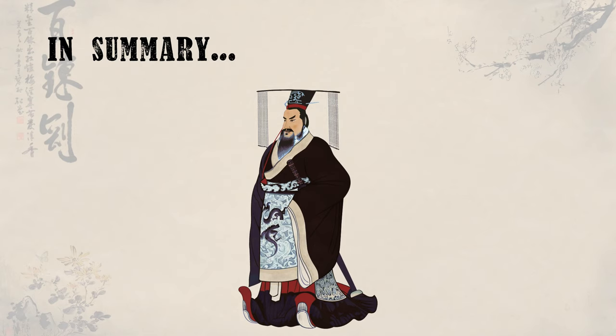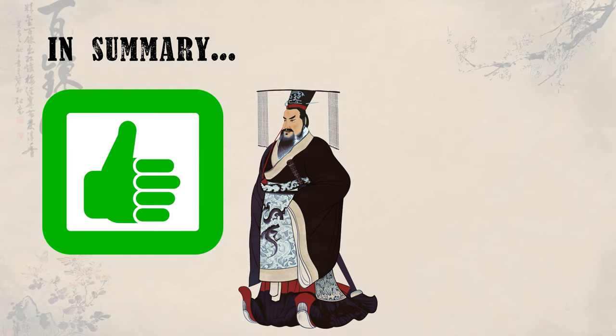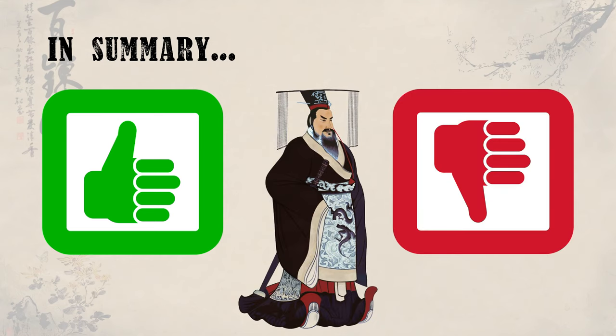So there you have it — a very quick history of Emperor Qin Shi Huang. A man who achieved great things that still influence the country of China today, but a powerful and perhaps cruel ruler who would stop at nothing to make sure he was seen as the best. Which is he more of? That is for you to decide. Thank you for watching 10 Minute Histories, and we hope you have learnt lots about Emperor Qin Shi Huang.